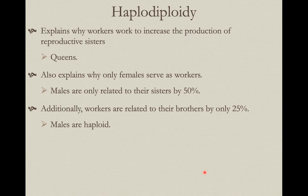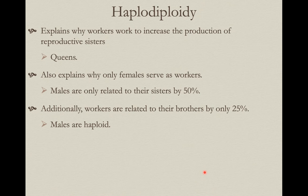Workers don't get very much out of producing reproductive males. The fewer brothers they help produce, the better for them, because they're only related to their brothers by 25%, and that's because the males are haploid.